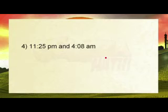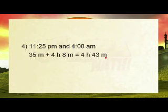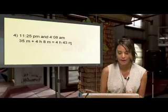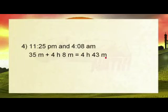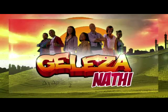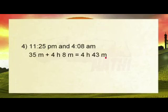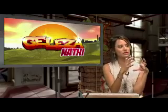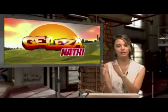Between 11.25pm and 8 minutes past 4. Again, we have 35 minutes between 11.25 and 12, plus 4 hours and 8 minutes between 12 and 8 minutes past 4, and that gives us 4 hours and 43 minutes. Break it up guys — work with your minutes first, get to a round number because it's easier to work with round numbers, and then move on to the minutes. That's all for this lesson.